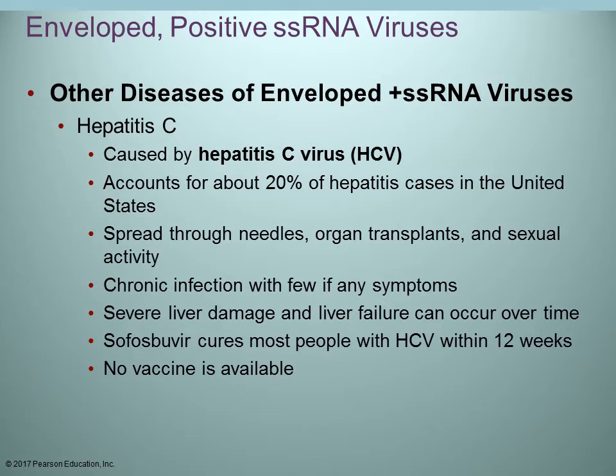Hepatitis C is another hepatitis virus — a positive single-stranded RNA virus. It is spread by needles, sexual activity, and organ transplants if the transplanted organ was contaminated. It becomes a chronic infection that can result in severe liver damage and ultimately liver failure over time. Right now there is no vaccine available.